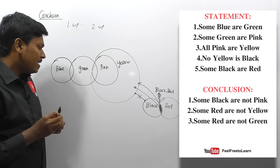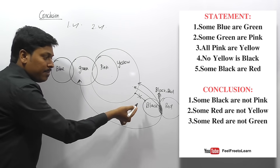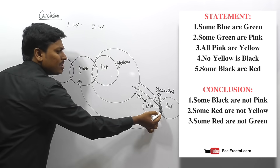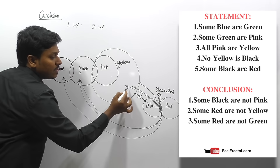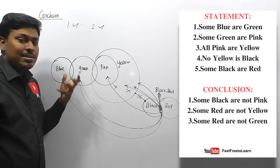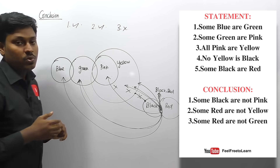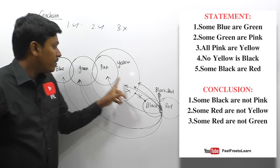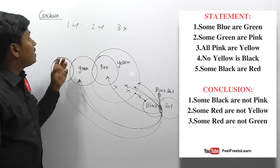Conclusion three: 'some red are not green.' Some red is this region — they say it is not green. But this region contains black, and black can connect with green (and also blue). There is no restriction preventing black from connecting with green. So some red could be green, meaning conclusion three does not follow. Final answer: conclusions one and two alone are true.